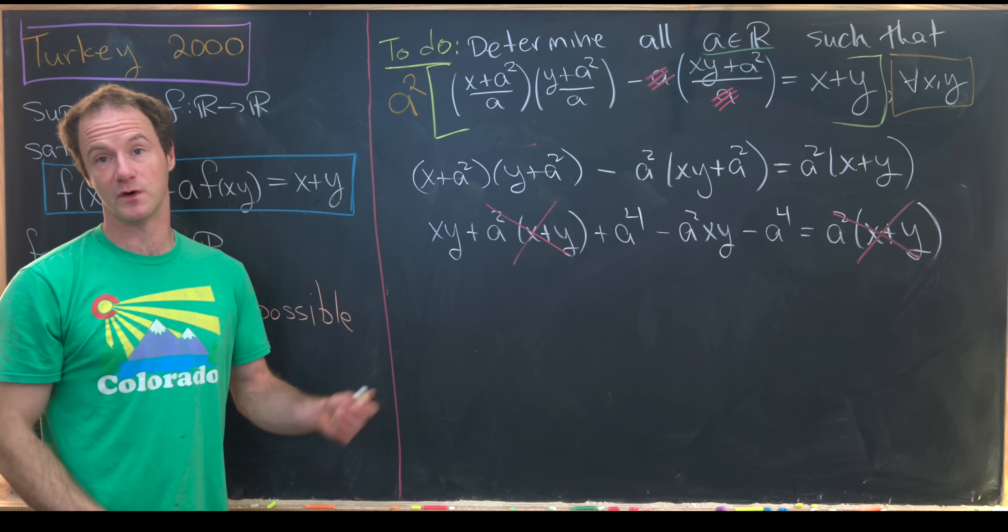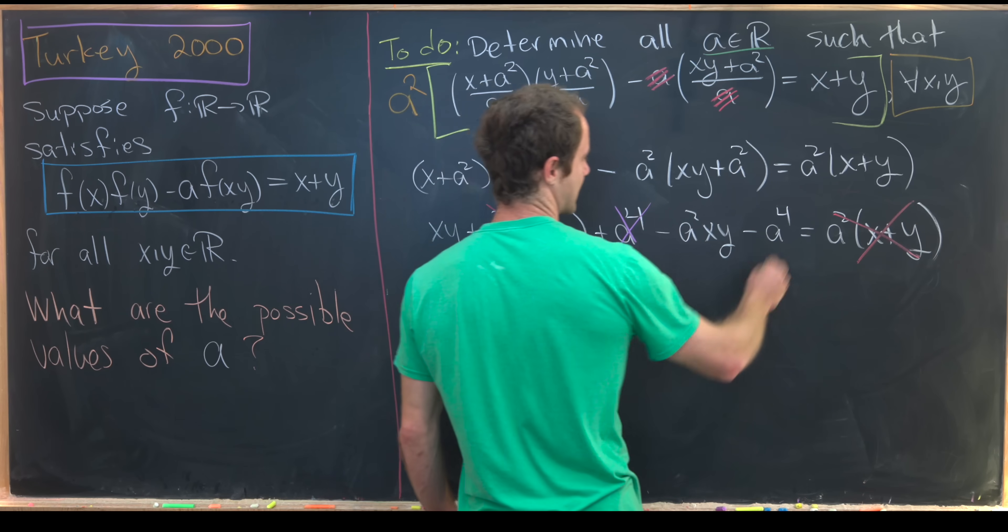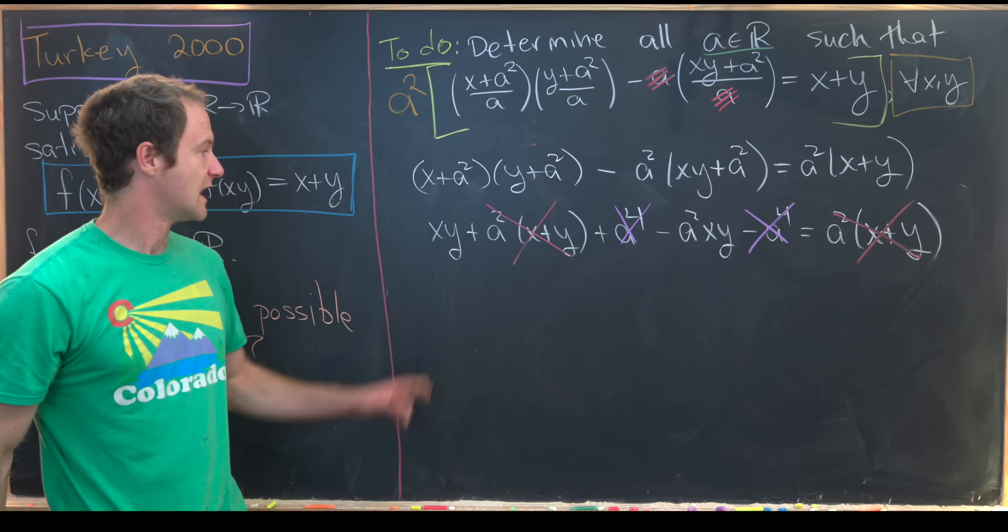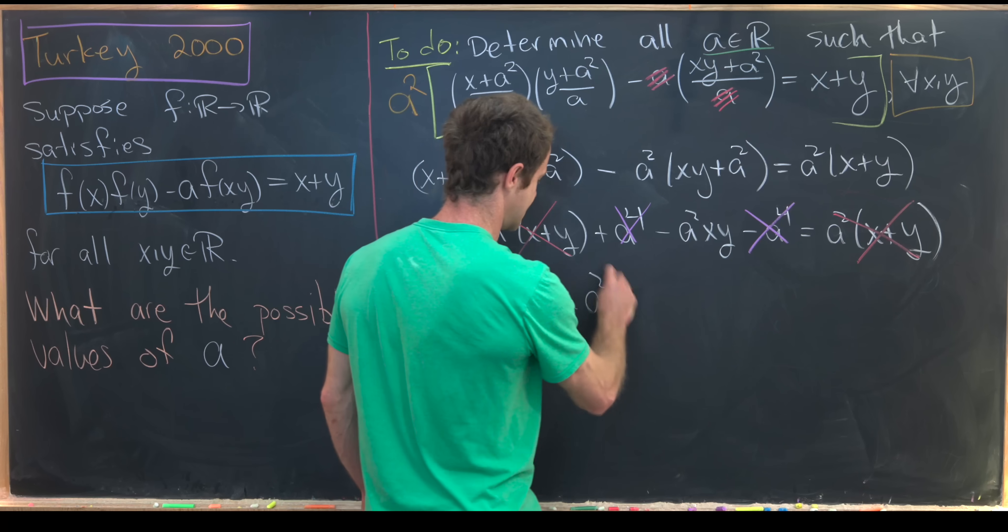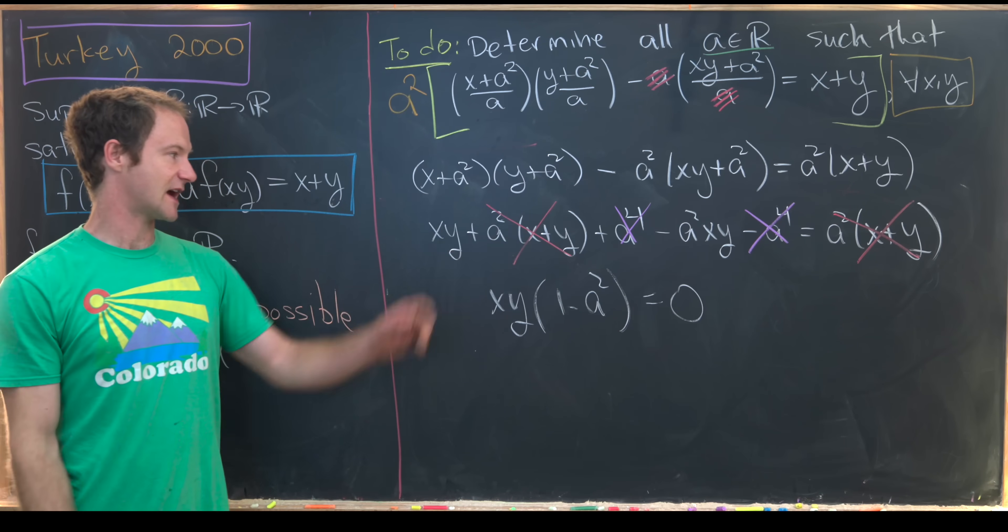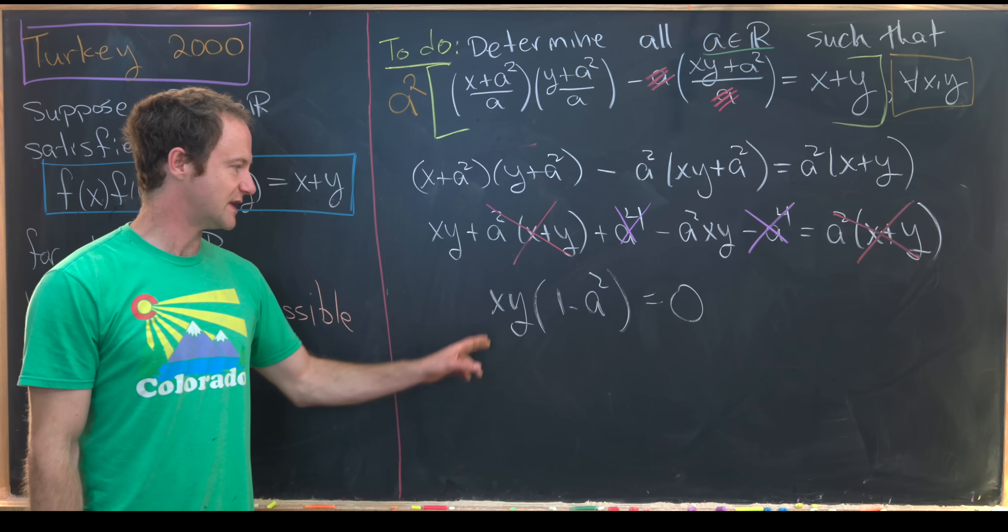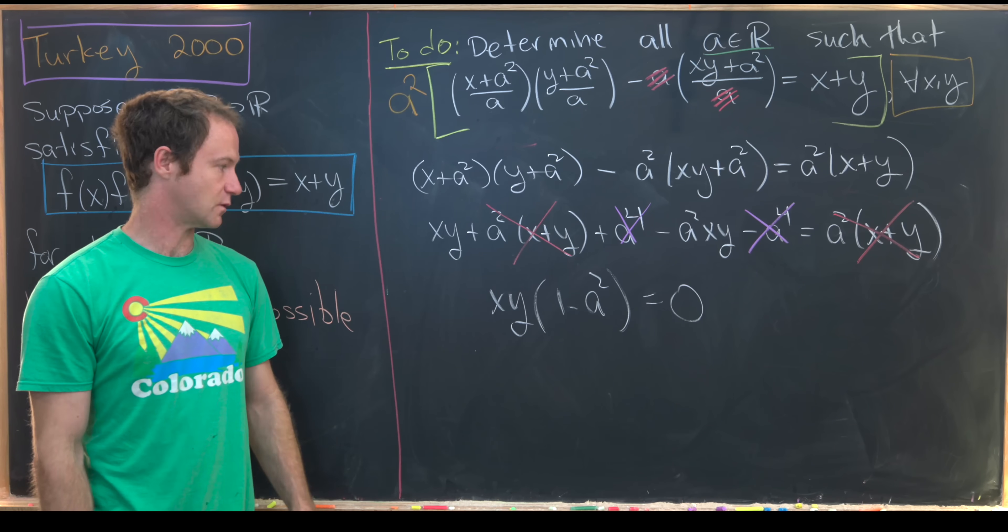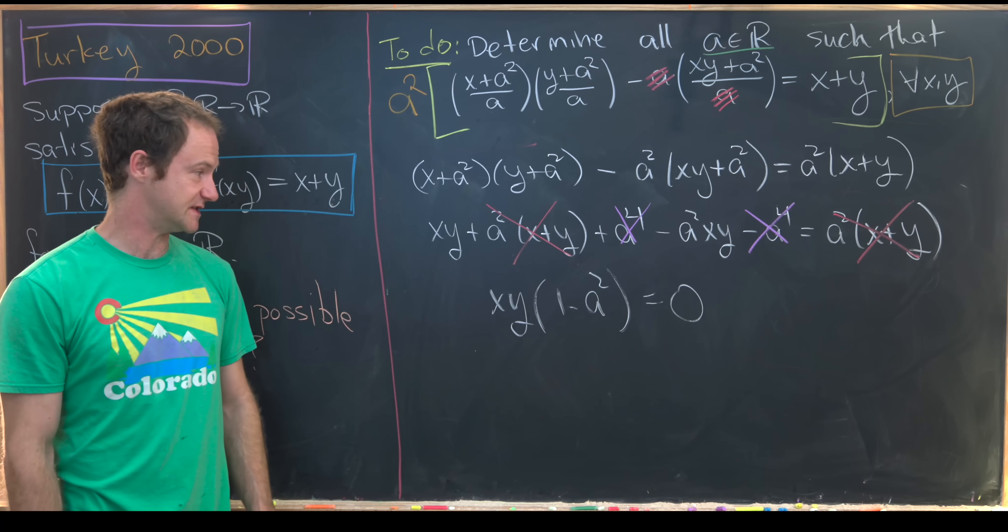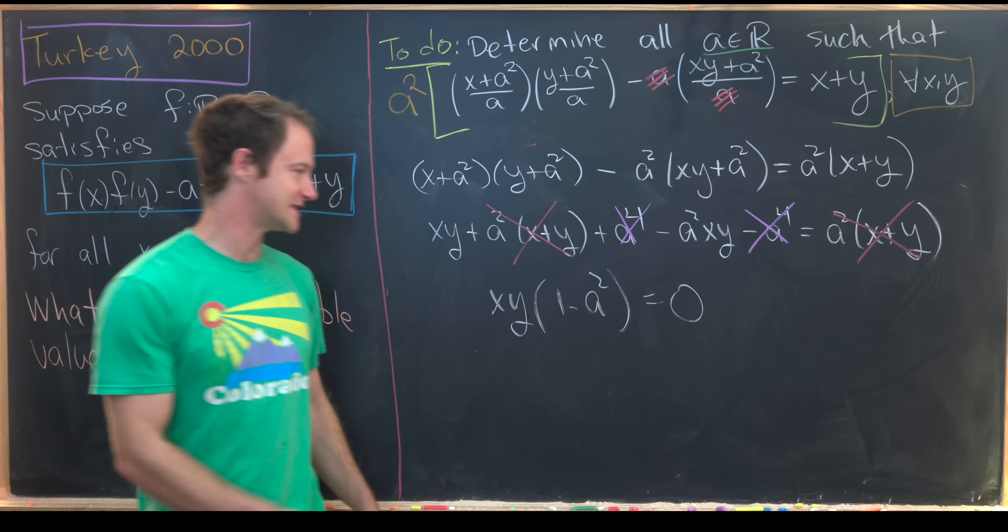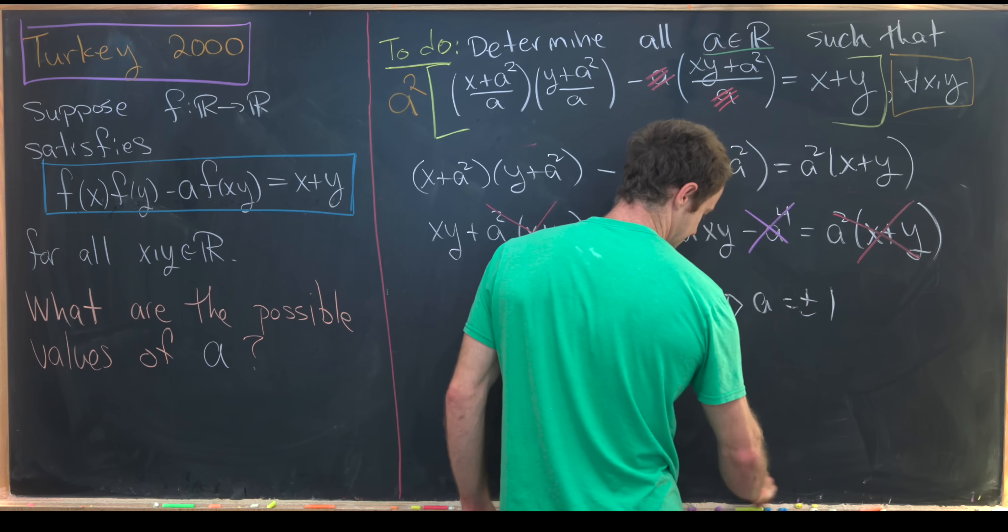And that leaves us with xy(1 - a^2) equals zero, just factoring out an xy from these two terms. But now this has to hold for all xy. So that means this cannot be assumed to always be zero, which means we need 1 - a^2 to always be zero, which means we need a to be plus or minus one.